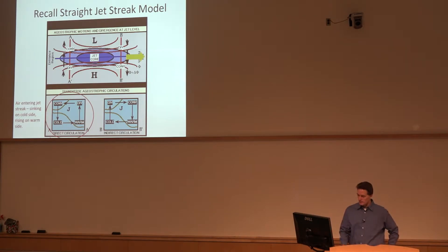There's a response to that called the direct thermal circulation in the entrance region, which I've highlighted here. This would be like a sloped isentropic surface. Looking into the page, the air coming into the jet streak, the response to frontogenesis is to weaken the gradient in the atmosphere. There tends to be ascent on the warm side, which results in adiabatic cooling.